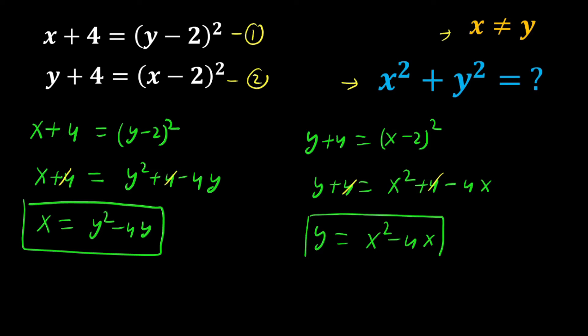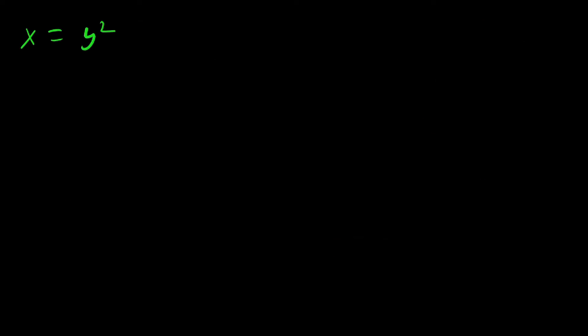Let us label these: equation number three is x equals y squared minus 4y, and equation number four is y equals x squared minus 4x.